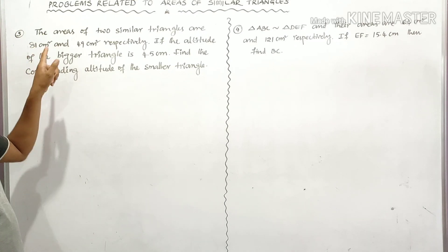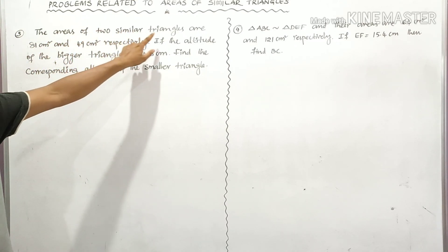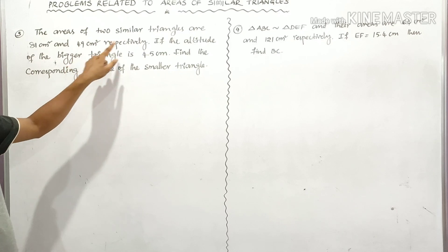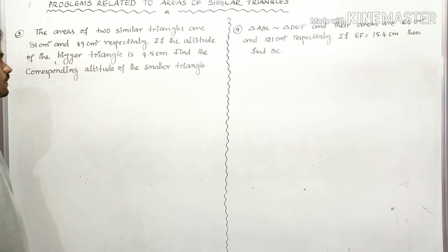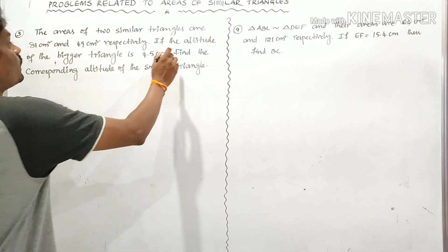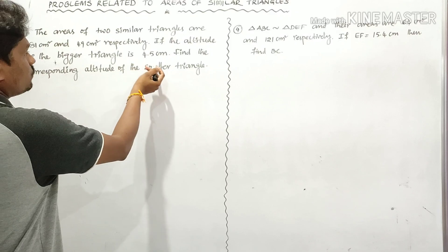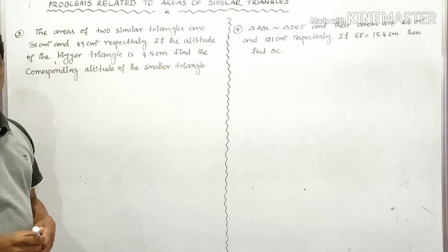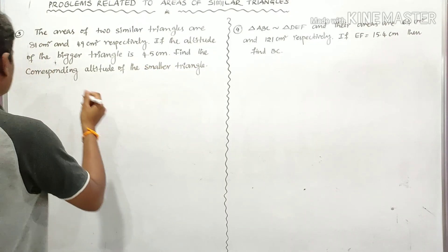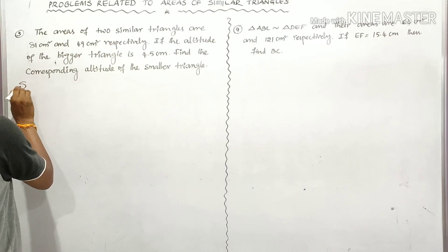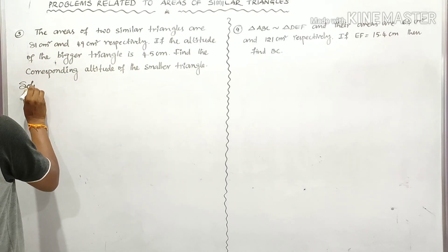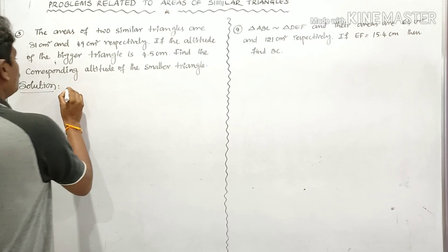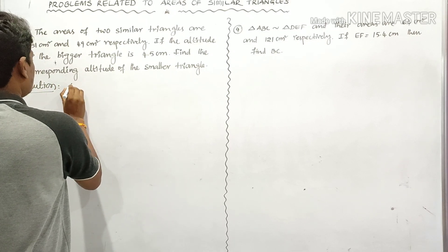In the third problem, the areas of two similar triangles are 81 cm² and 49 cm² respectively. If the altitude of the bigger triangle is 4.5 centimeters, find the corresponding altitude of the smaller triangle. Let's see how we can find the solution.